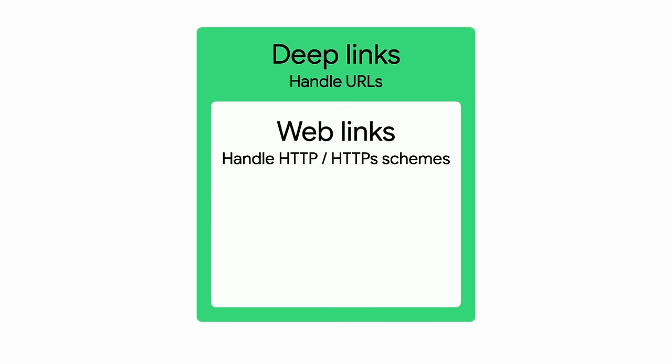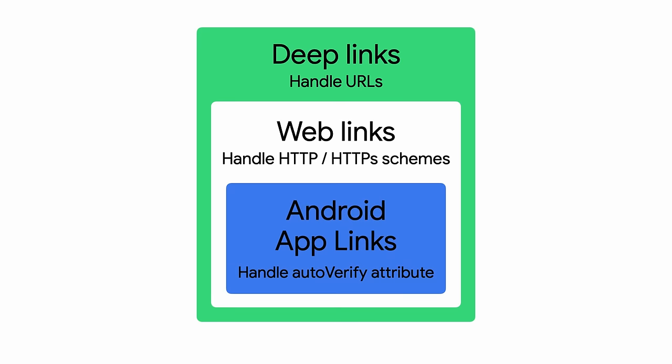A web link is a type of deep link that uses either an HTTP or HTTPS scheme. An Android app link is a subset of a web link, but provides a better user experience as we'll see in this video. For more details on how deep linking works on Android, you can also check out the Introduction to Deep Linking series on the Android Developers channel.